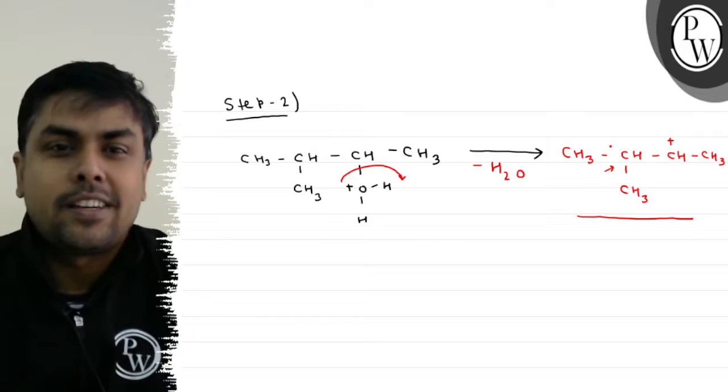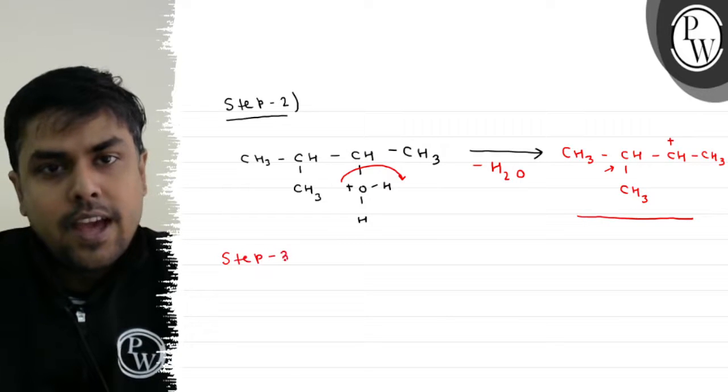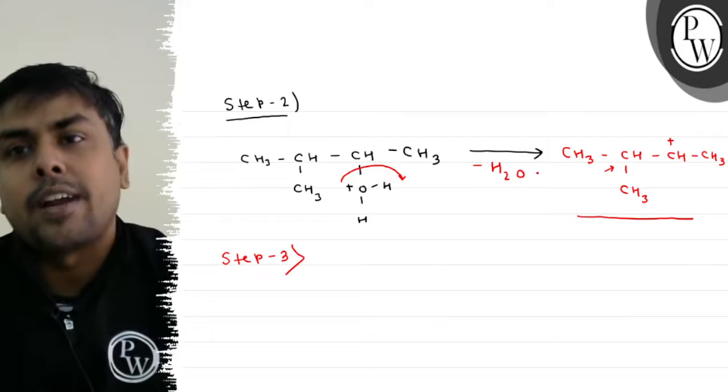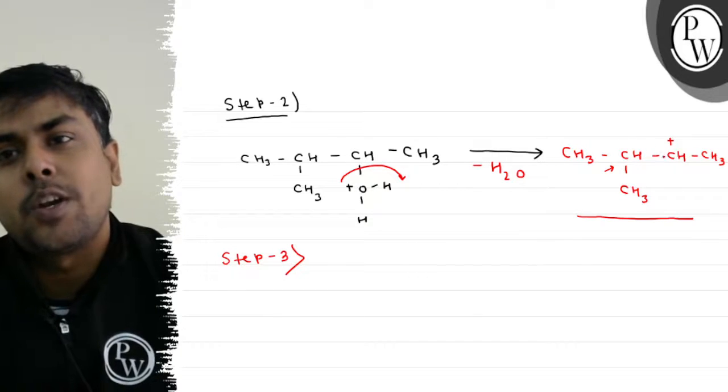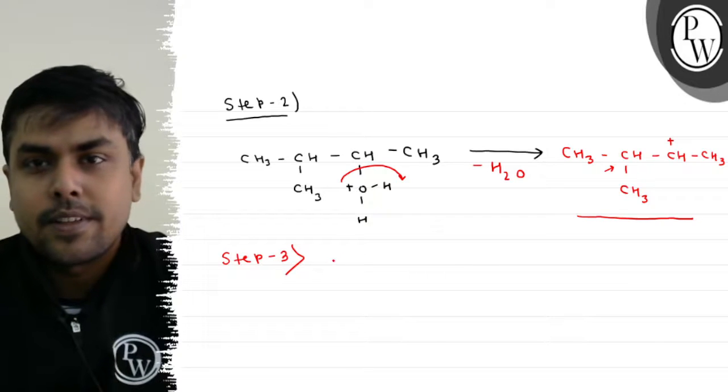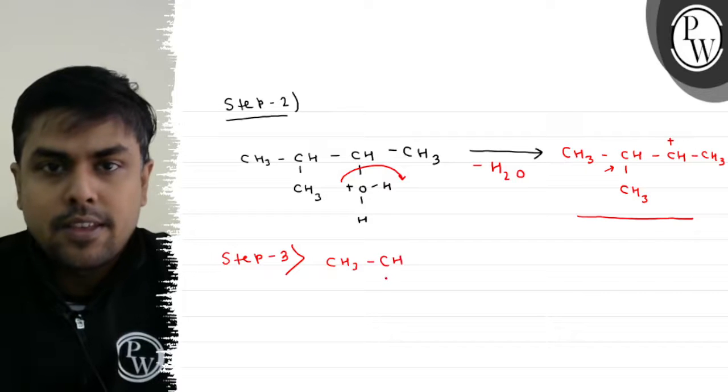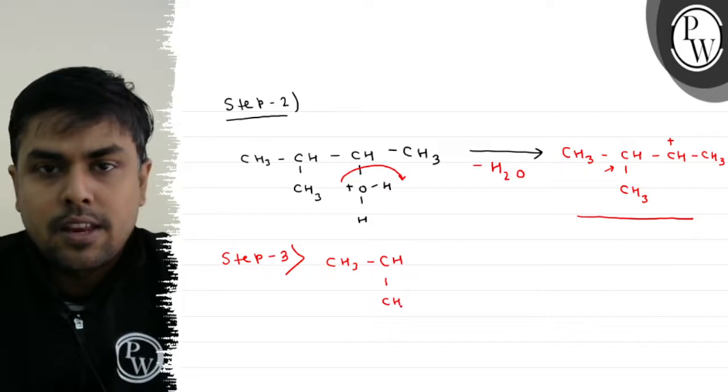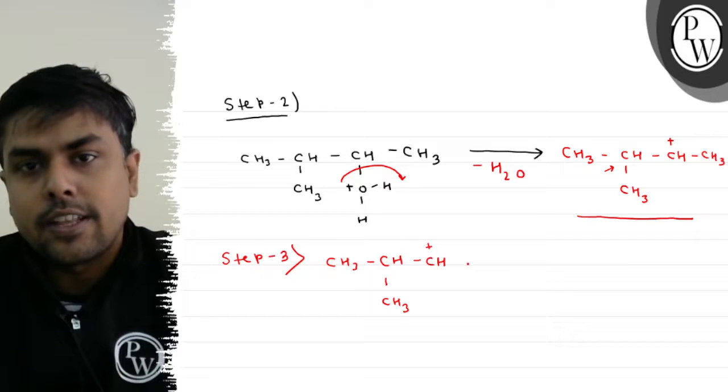Step 3 is the rearrangement of carbocation. What will happen? Hydrogen shift - a 1,2-hydride shift. Let's write this step: CH3-CH(+)-CH(CH3)-CH3 undergoes hydride shift to form CH3-C(+)(CH3)-CH2-CH3.